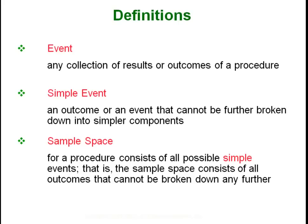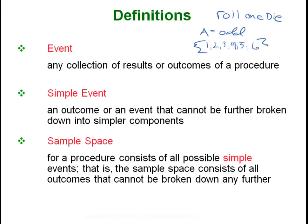For example, let's say you were going to roll one die — half of a pair of dice. An event would be something like A equals getting an odd roll. A simple event is an outcome that cannot be further broken down into simpler components, so your simple event would be rolling one, two, three, four, five, or six, and your sample space would be the collection of all of those.